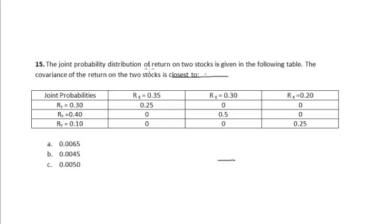The joint probability distribution of return on two stocks X and Y is given in the following table. The covariance of the return on the two stocks is closest to... Here the joint probabilities have been given along with the probability of different states. For one state it is 0.25, for the other state it is 0.5, and for the third state it is 0.25.